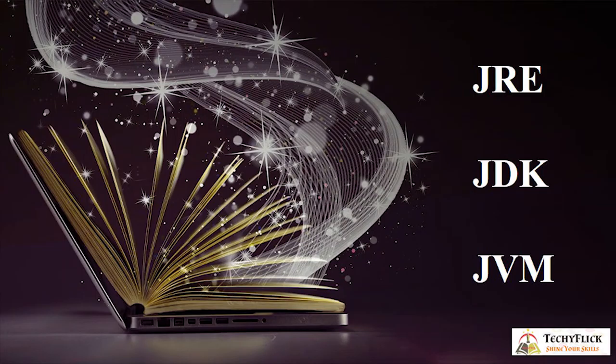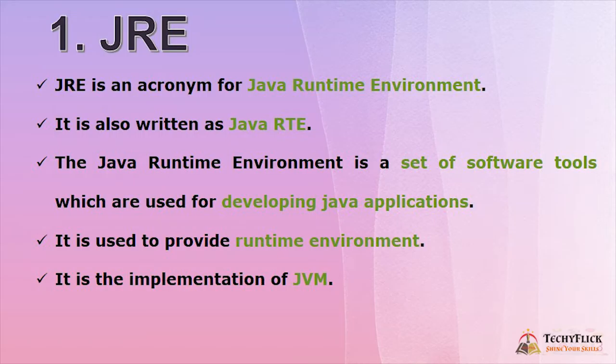In this video we are going to discuss the Java environment. The three major key points are JRE, JDK, and JVM. JRE is an acronym for Java Runtime Environment, also written as Java RTE. The Java Runtime Environment is a set of software tools used for developing Java applications. It is used to provide the runtime environment and is the implementation of JVM, which means Java Virtual Machine.